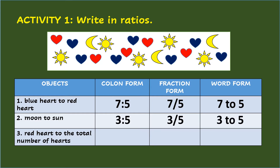Number 3: Red heart to the total number of hearts. There are 5 red hearts. And if you count the total number of hearts, that is 12. So the ratio in colon form is 5 is to 12. In fraction, it is 5/12.